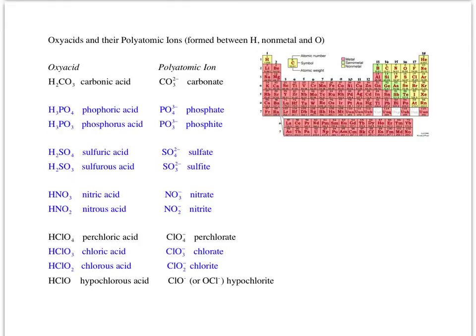For halogens — chlorine, fluorine, iodine, or bromine — there are actually four possible forms, not just two. The middle two (IC and OUS) are similar to the ones above. When there are more than three oxygens (four in this case), we say per — meaning as many as possible. Hypo corresponds to just one oxygen, the smallest amount possible — so hypochlorous.